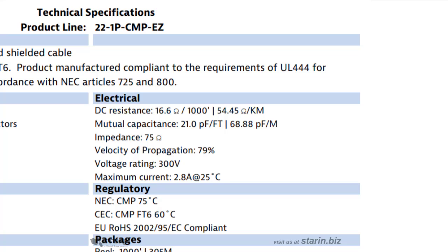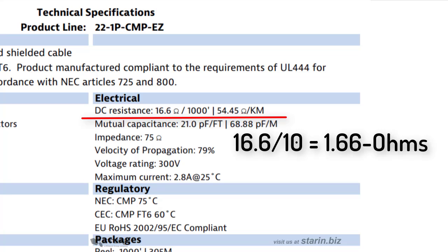For use in analog systems the most important item is DC resistance. Here we see 16.6 ohms per thousand feet. You'll need to calculate the specific resistance for the actual length of cable that you need. So if we're using a hundred-foot cable length, the resistance will be a tenth of that thousand-foot value, or 1.66 ohms.